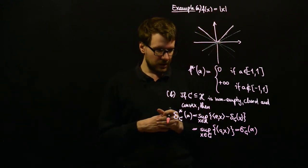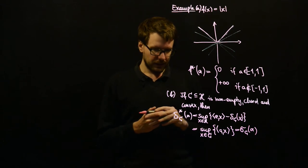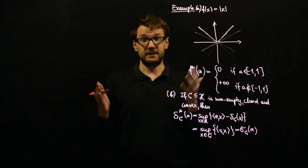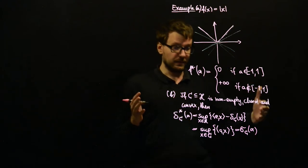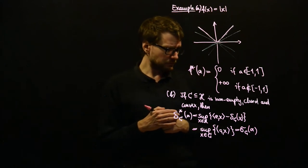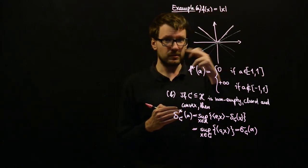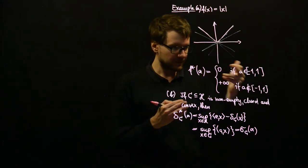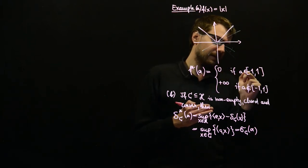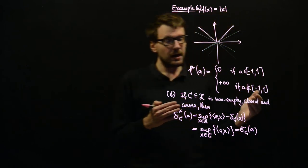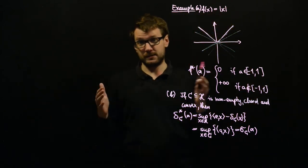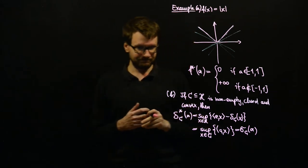So any indicator function has as its conjugate a sublinear function. In particular, since taking the conjugate twice returns the original function, the indicator function of the closed interval [−1, 1] has the absolute value function as its conjugate, which is clearly sublinear.